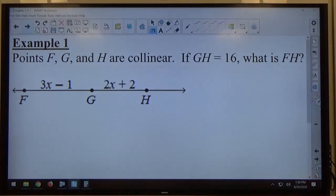All right, example one. Points F, G, and H are collinear. If GH equals 16, what is FH?